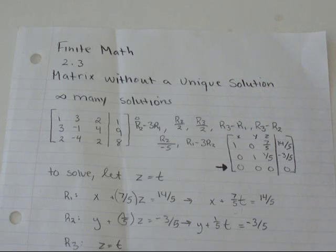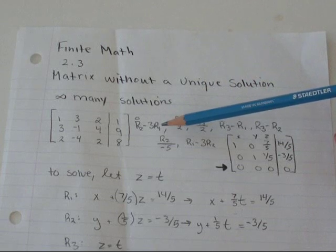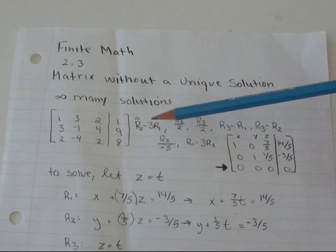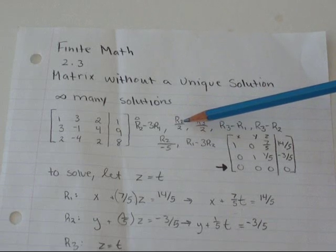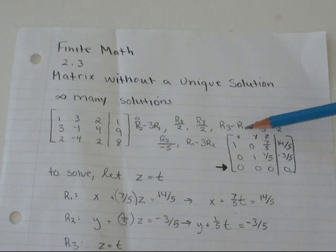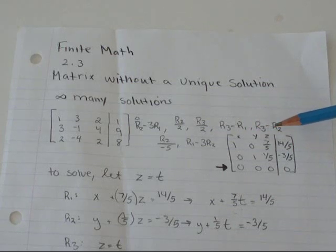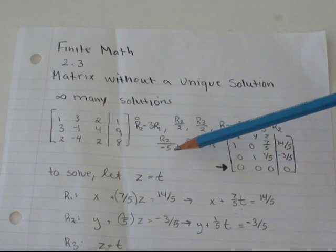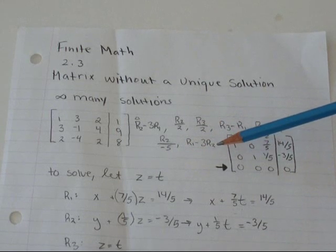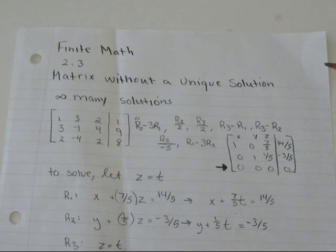So I didn't write down all the steps, so it takes forever. But I did write out, you know, if you want to solve it yourself, I've written out the steps I did. So first I did r2 minus 3 row 1. Then I did r2 divided by 2, row 3 over 2, row 3 minus row 1. Then row 3 minus row 2, then row 2 divided by negative 5, then row 1 minus 3 row 2. And when I did that,